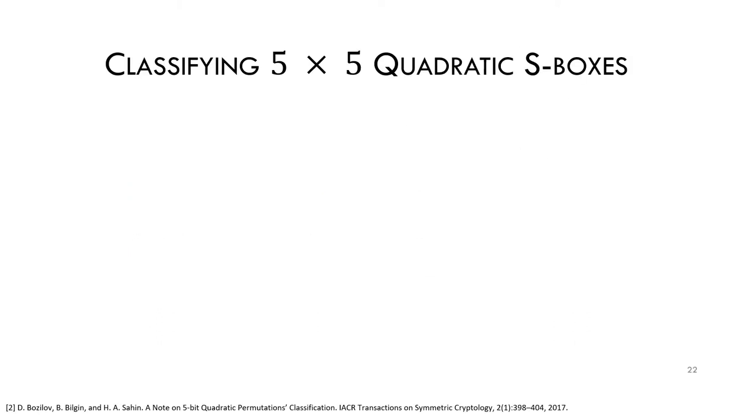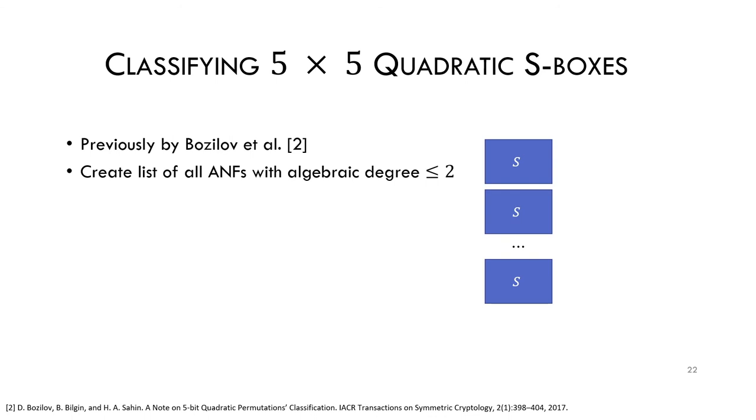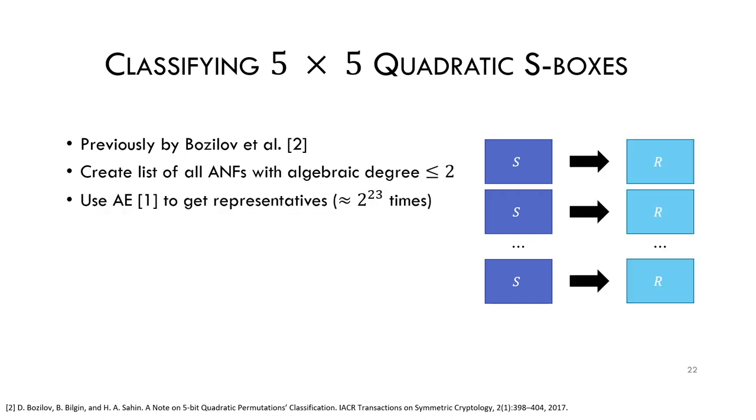We now start from the methodology of Bozilov et al. that was used to classify quadratic 5-bit S-boxes. Their approach was to construct an exhaustive list of quadratic algebraic normal forms and to use the affine-equivalent algorithm to get their representatives. The list was approximately 2 to the 23 items long, which is like 8 million items.